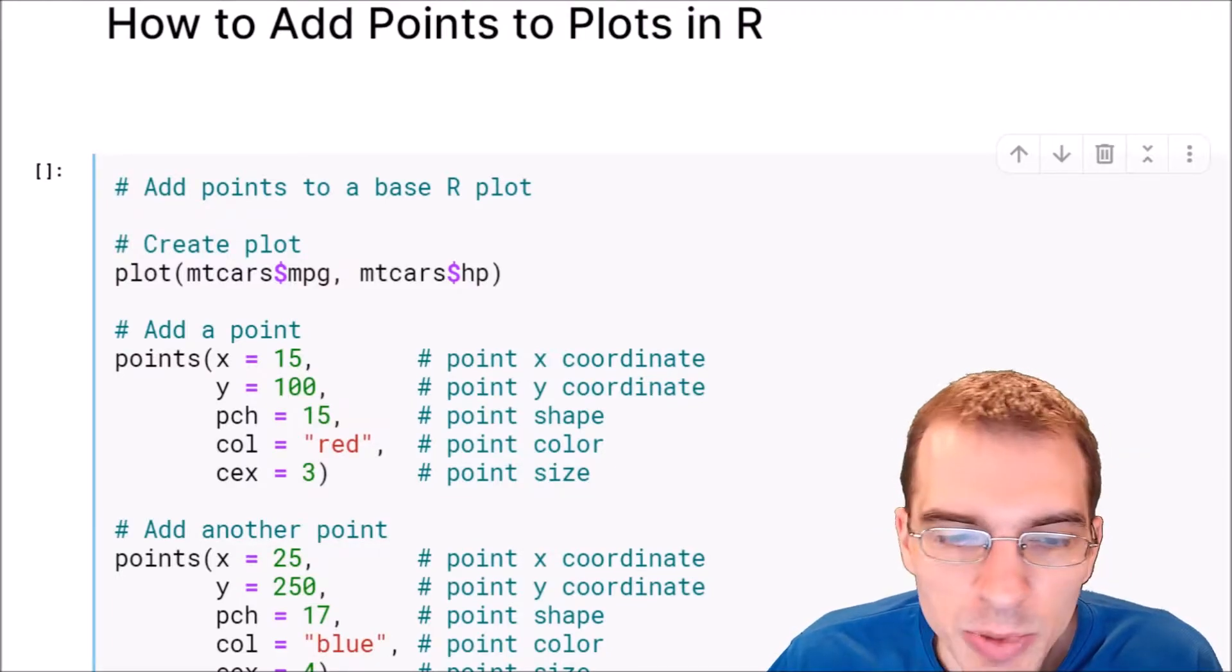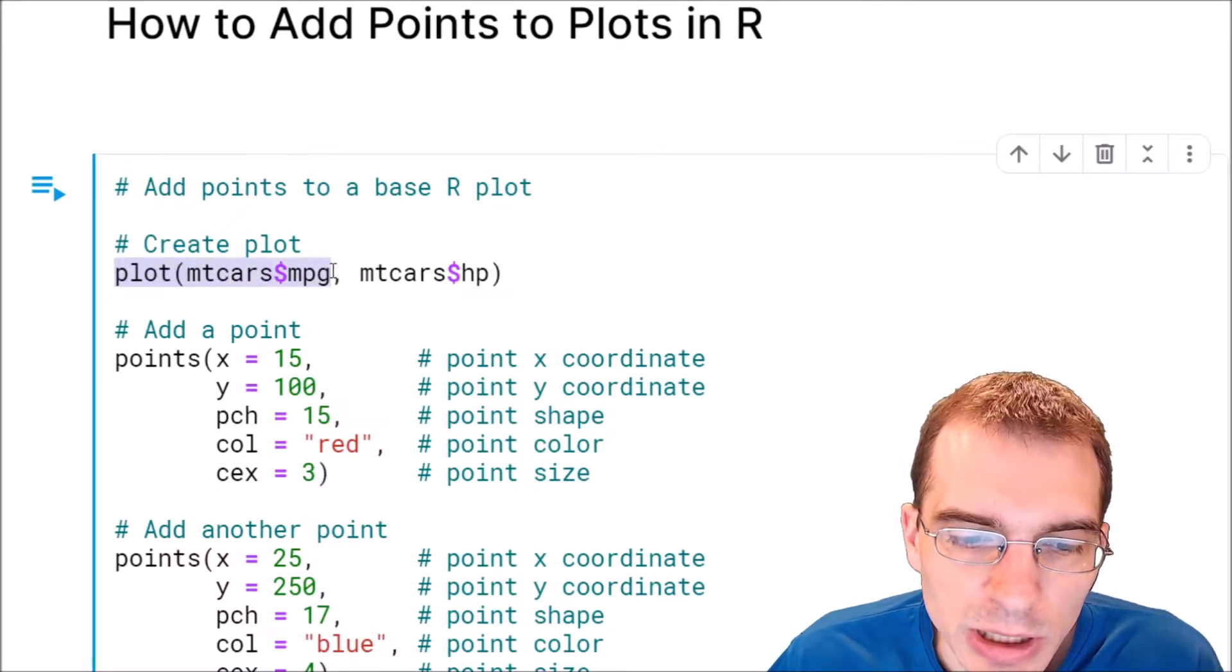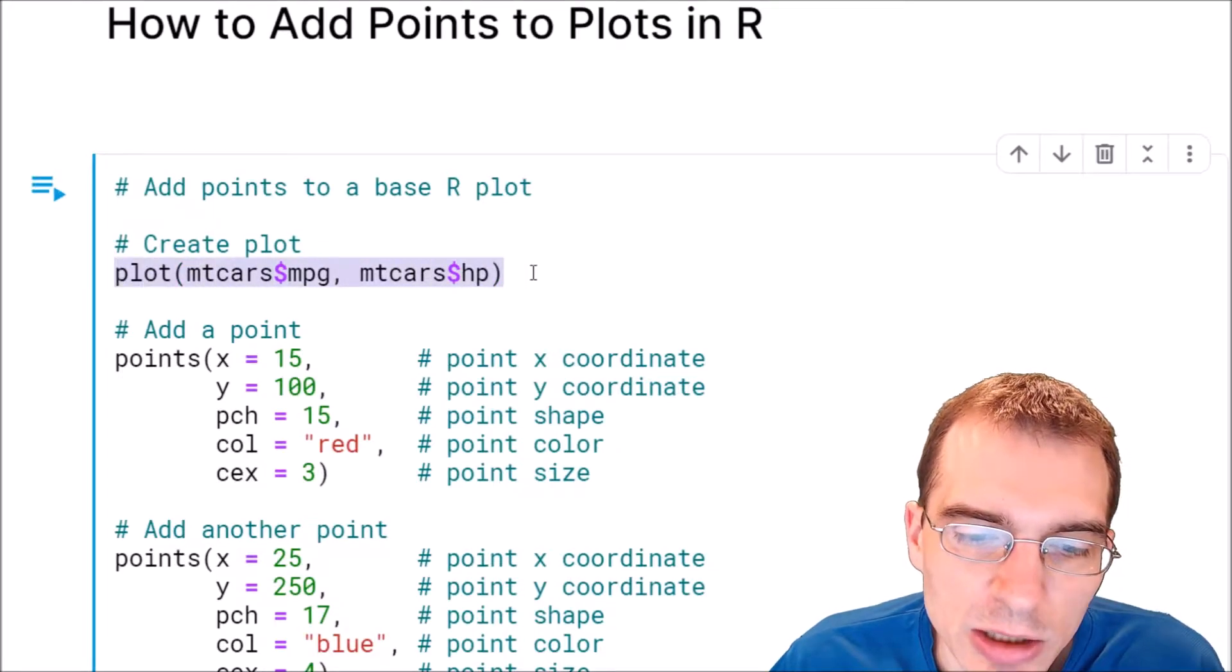We'll start by creating a plot. To do that we're just going to call plot on the mtcars data set. We're going to plot the mpg column by the horsepower column. And now to add a point to a base R plot, all you have to do is after your initial plot call here.